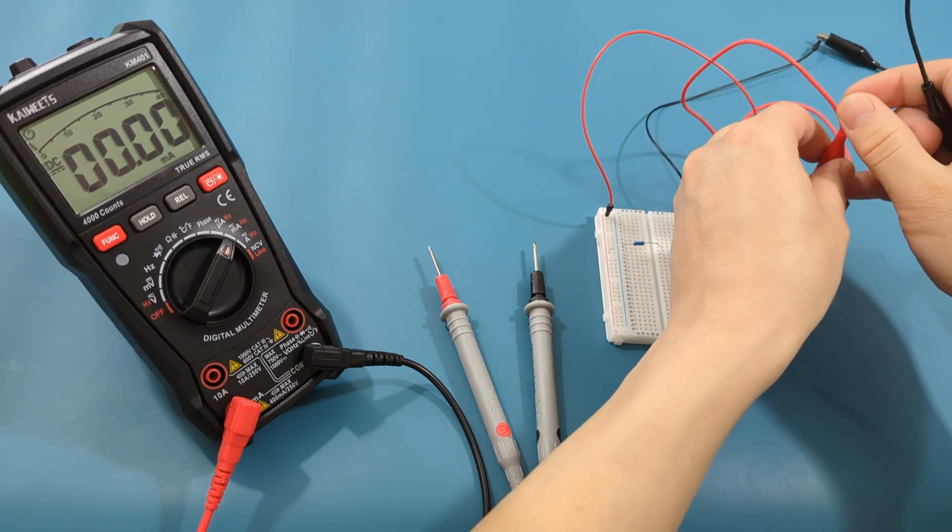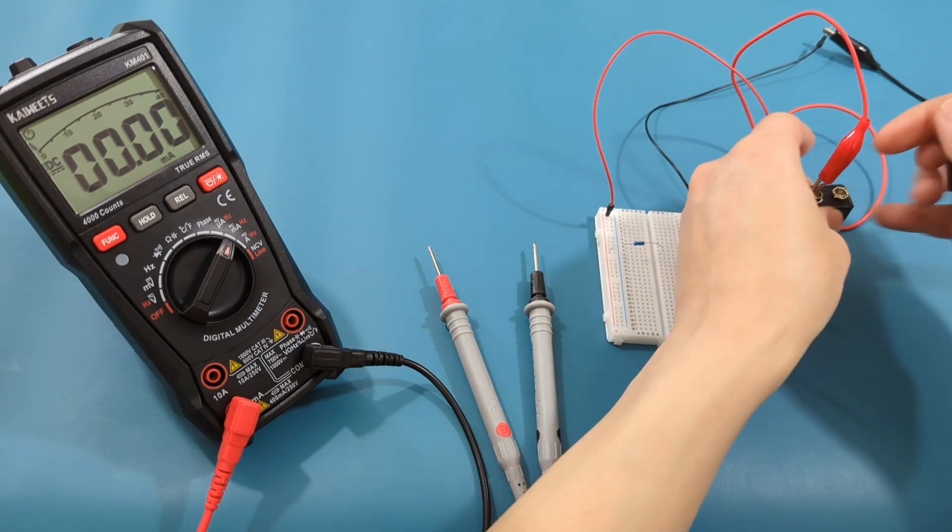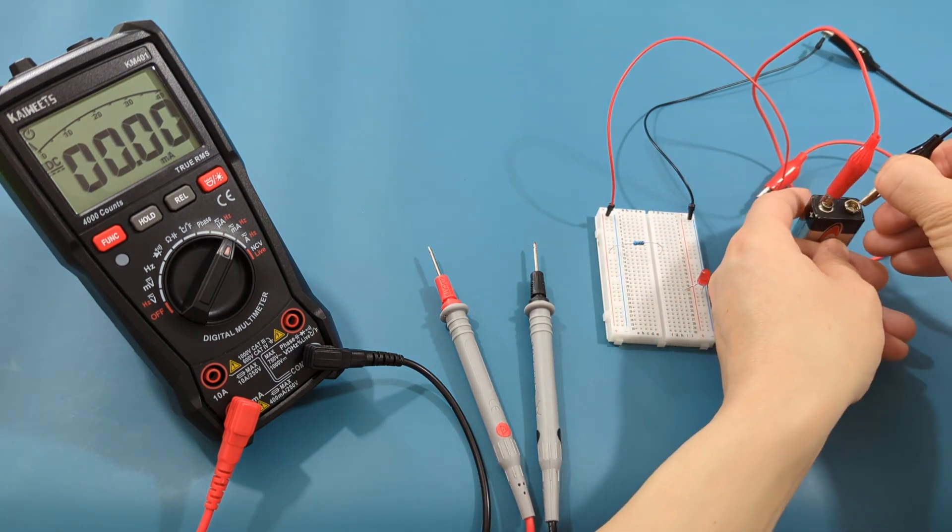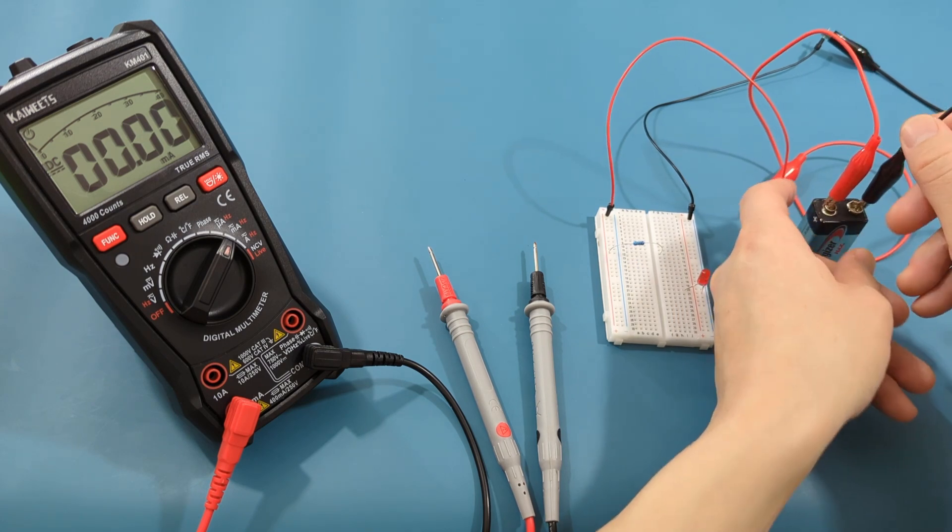Touch the red probe lead to the right side of the resistor. Touch the black probe lead to the left side of the LED diode. The LED diode lights up.